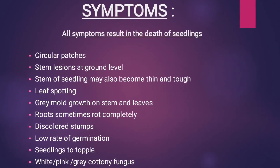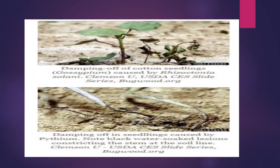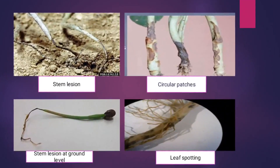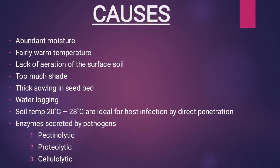Here are all the possible symptoms that can occur: circular patches, stem lesions, seedlings may become thin or spindly, chaff, leaf spotting, gray mold sometimes, roots sometimes completely rotted and discolored, low rate of germination, toppling, and fungus can appear in white, pink, or gray cottony fungus form. The basic symptom is that the plant lays down — toppling of seedlings, stem lesions, circular patches, leaf spotting at the stem level.